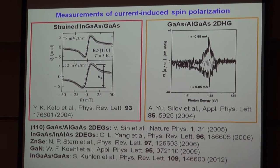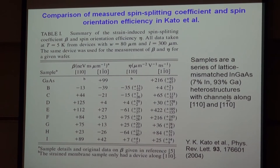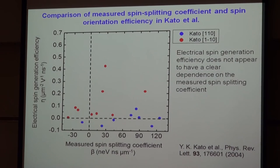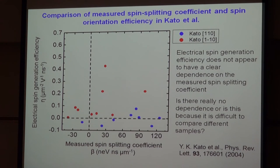So how is this spin-orbit field related to this electrically generated spin polarization? In Yui Kato's paper, he measured a number of samples and carefully characterized both the spin-orbit field coefficient and also the electrical spin generation efficiency. As you increase the magnitude of the electric field, you get a larger effect, and it seems to be roughly linear — so you can fit a slope to get the electrical spin generation efficiency. When you plot those values, it isn't really clear whether there is a trend, and so this was one of the questions we wanted to look into.